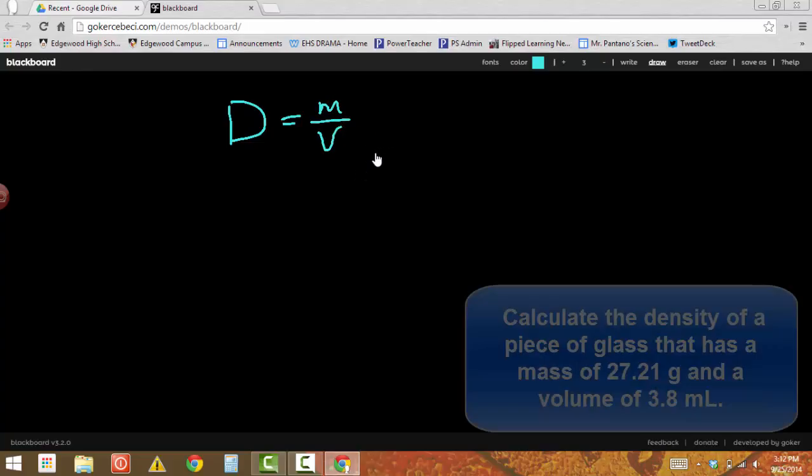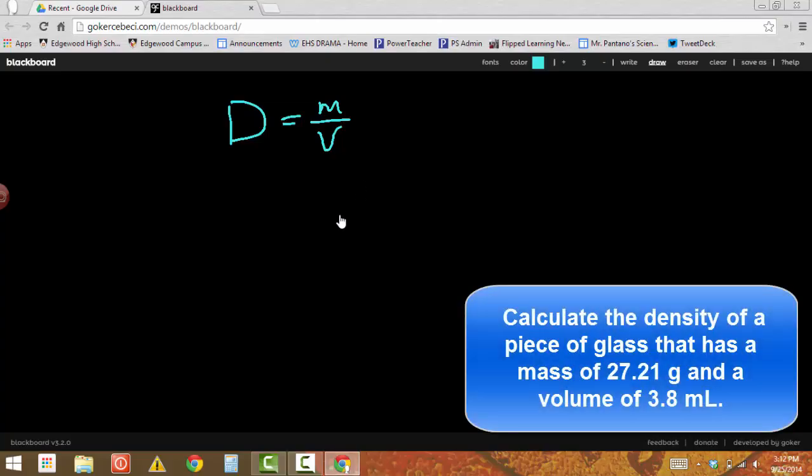So we've done some calculations where you calculated the density. If I give you the mass and volume, for example, let's say we're going to calculate the density of a piece of glass that has a mass of 27.21 grams and a volume of 3.8 milliliters. What's the density? Okay, so I put in my values for mass 27.21 grams and my volume 3.8 milliliters and I do my calculation in my calculator and I get 7.16.